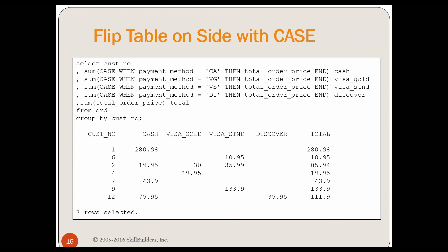Of course we can also do it with CASE — very simple, and this is the way I would do it. CASE WHEN payment method equals CA THEN total order price END. There's no ELSE, so it's null. I sum them up and get the same exact result. So now I flip the table on the side — probably going to use CASE, and I could do it either way.